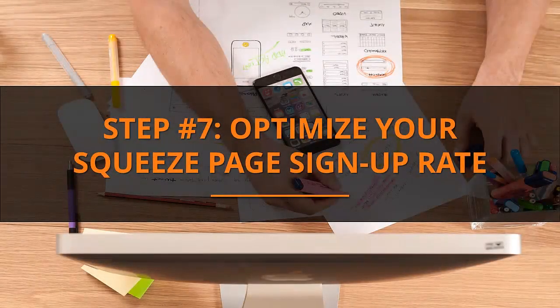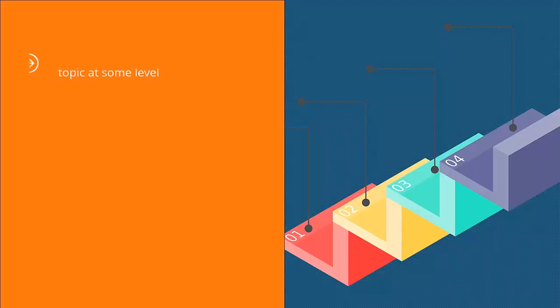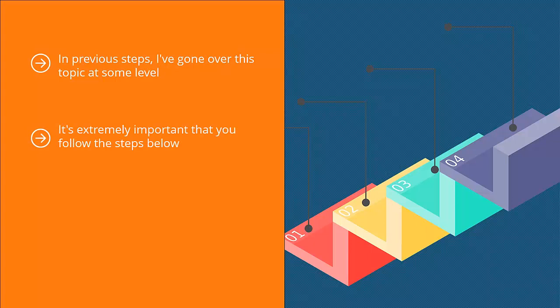Step number seven: optimize your squeeze page signup rate. In previous steps I've gone over this topic at some level, but optimizing your squeeze page plays a critical role in the success of your mailing list campaigns. You need to go through specialized steps to ensure your optimization efforts are correct. It's extremely important that you follow the steps below.